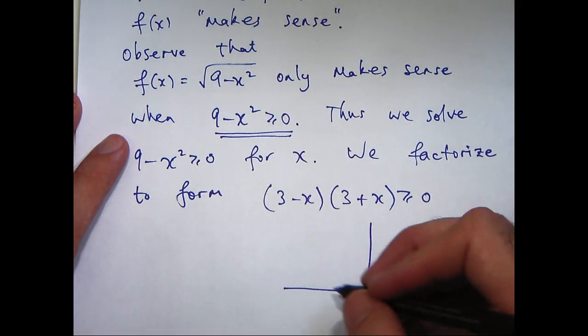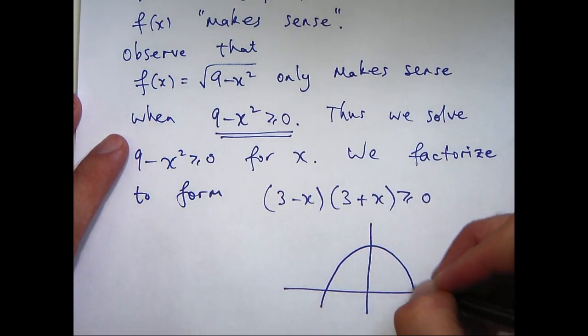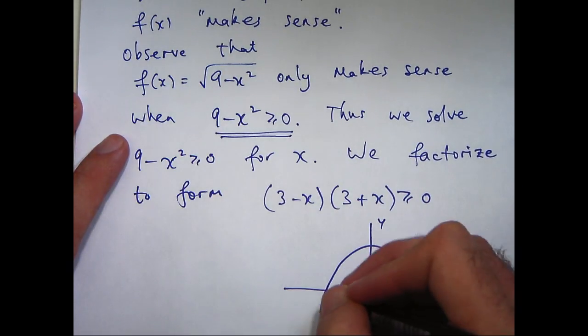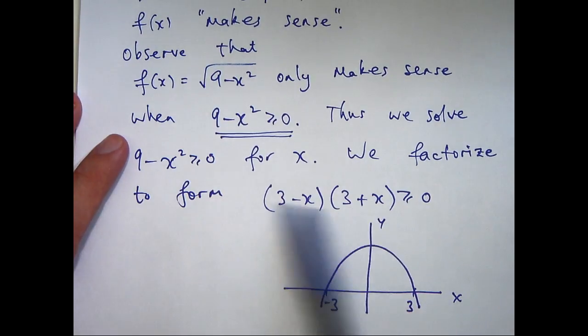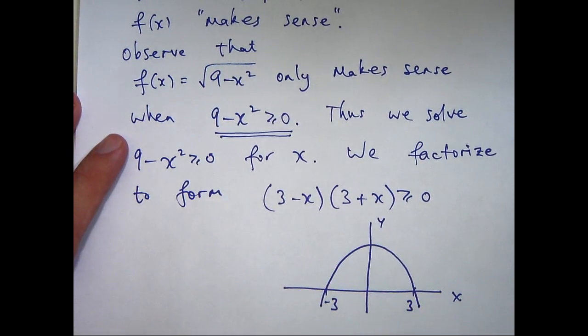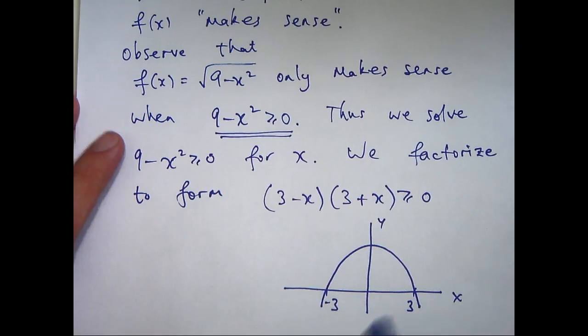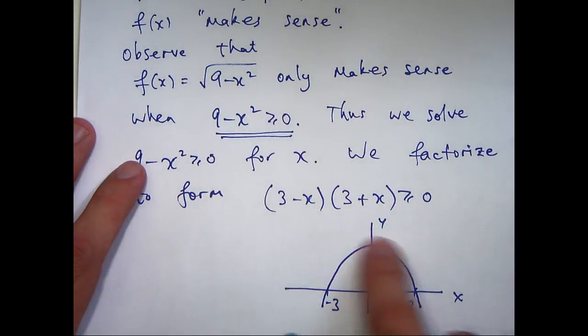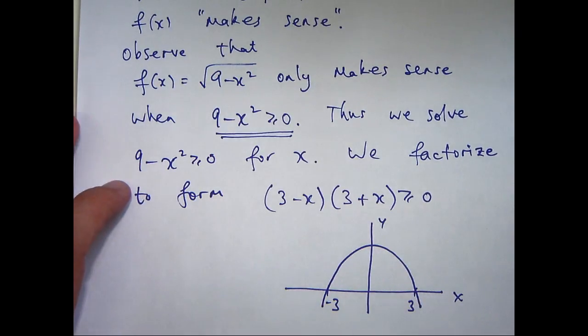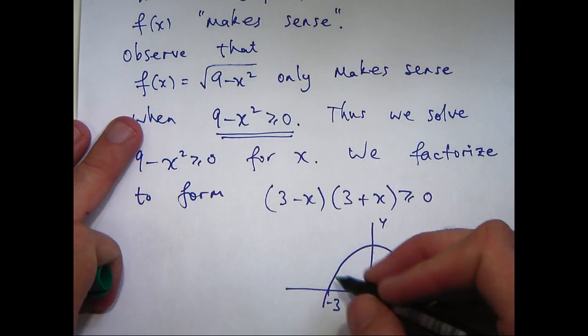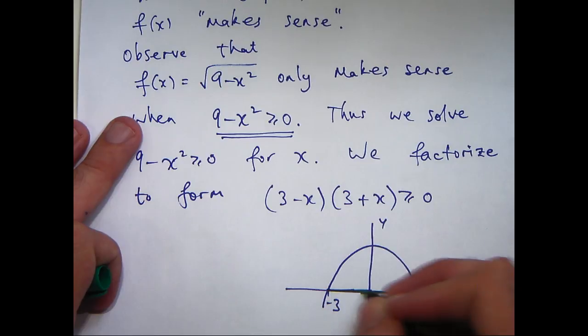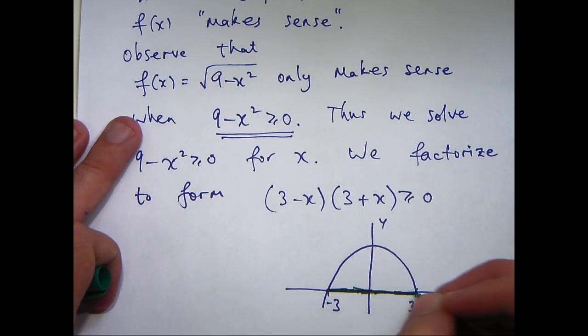This is an n-shaped parabola that cuts the axis, or this left-hand side is an n-shaped parabola that cuts the axis at minus 3 and 3. So now we have to identify where does this graph lie above or on the x-axis and it's this part here.